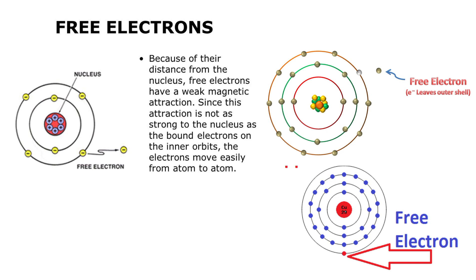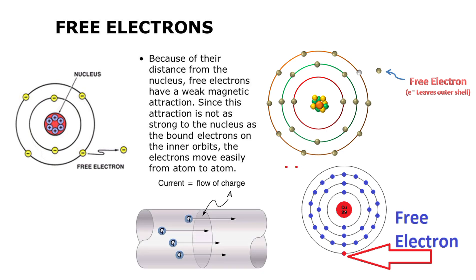The electron present at the outermost orbit is free from the nucleus — that is known as a free charge. Always remember that free charges are responsible for flowing electric current in a circuit, because the flow of these charges produces an electric current. So free charges are responsible for current flow.